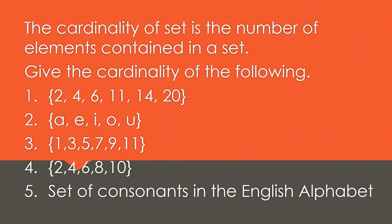The cardinality of a set is the number of elements contained in a set. When we say cardinality, you are just going to count the elements. For example, we have one, two, five — you count the cardinality of those sets.